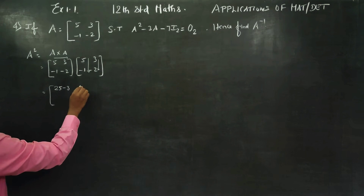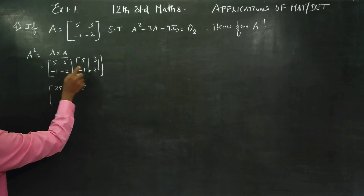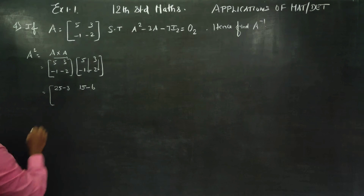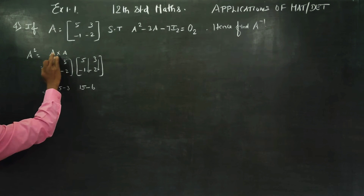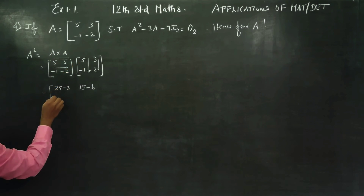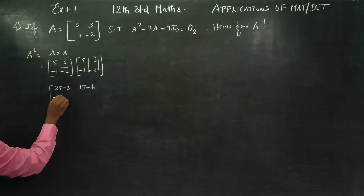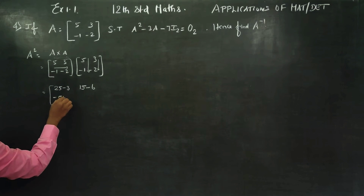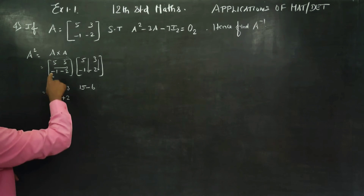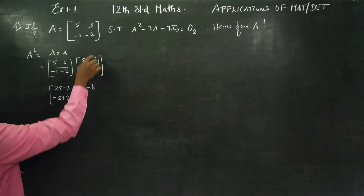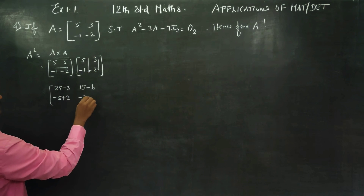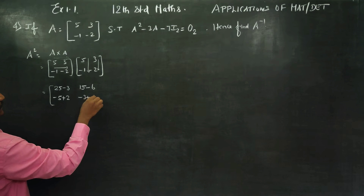5×3 is 15, 3×(-2) is -6. Second row: (-1)×5 is -5, minus into minus is plus 2. Next, 1×(-3) is -3, minus into minus is plus 4.